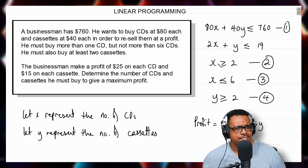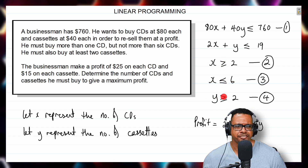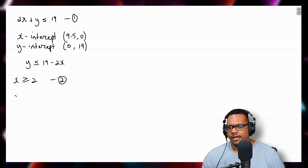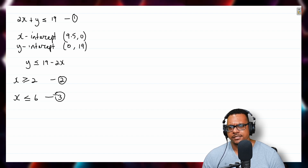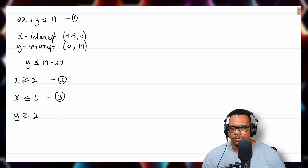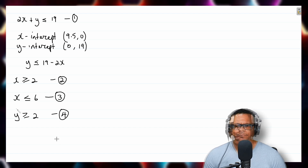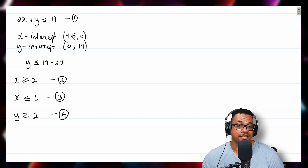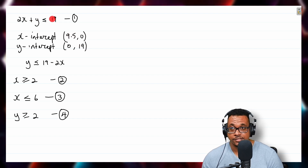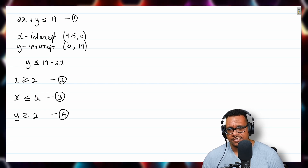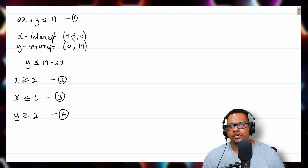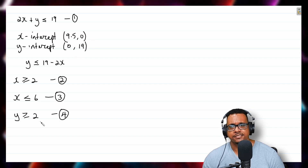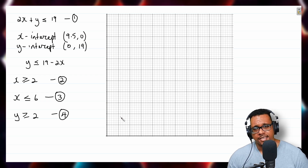The other inequalities are: x ≥ 2 as the second inequality, x ≤ 6 as the third inequality, and y ≥ 2 as the fourth inequality. We need to represent all four inequalities on the Cartesian plane. Given that we need to reach 9.5 on the x-axis and 19 on the y-axis, I'll set up the grid. Here I have my y-axis and x-axis. Labeling the axes, I'll count in twos on the y-axis and by ones on the x-axis.